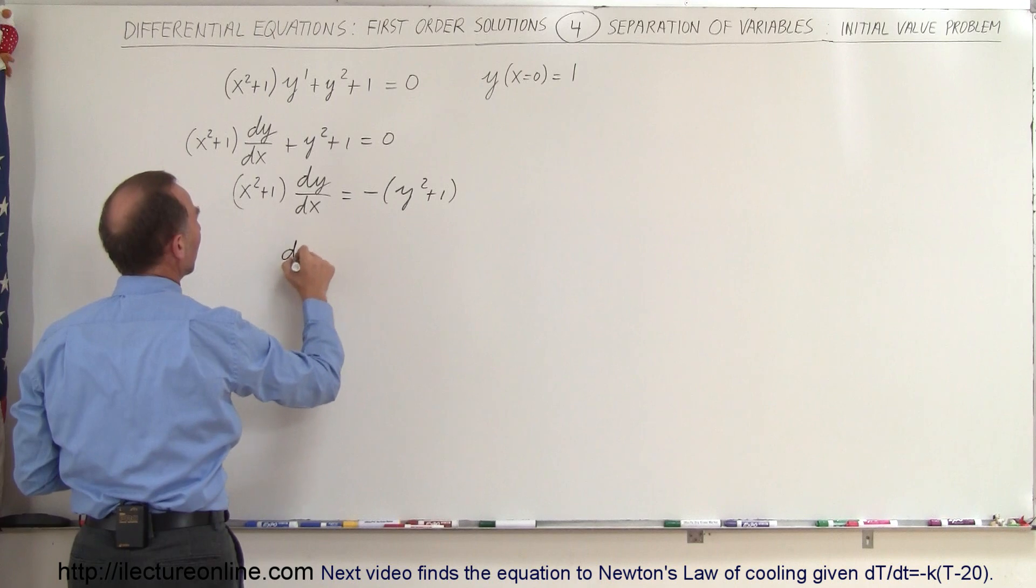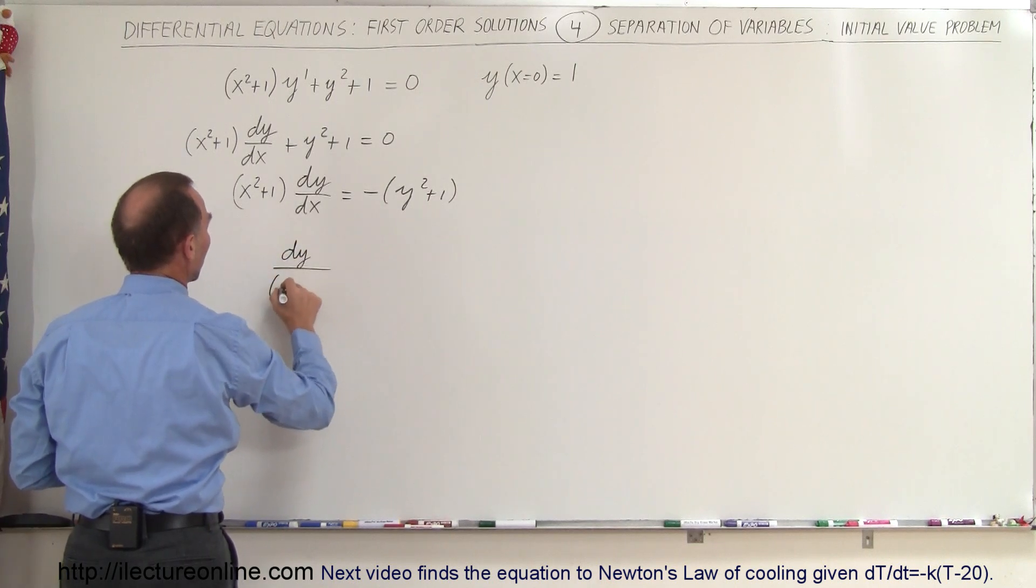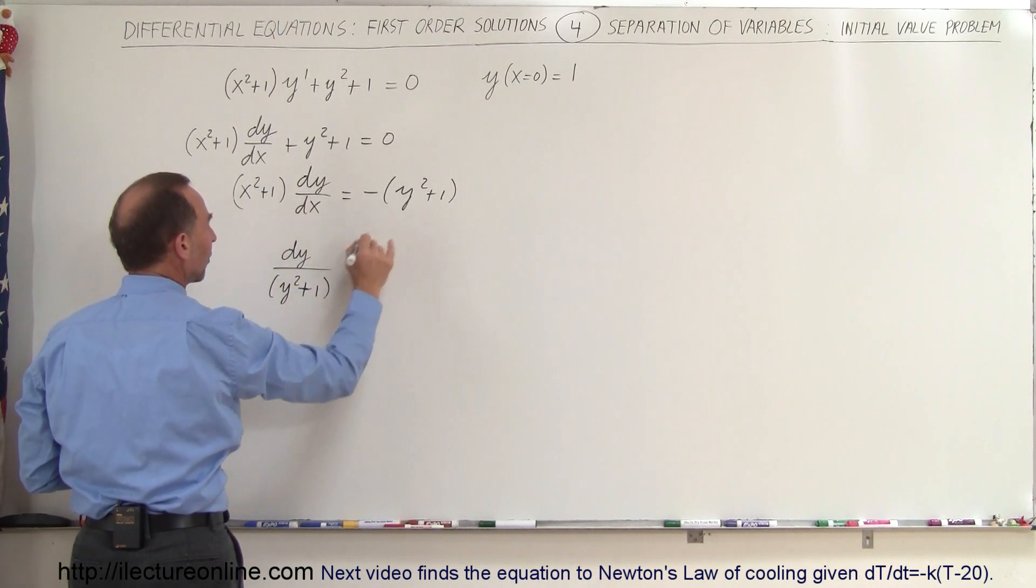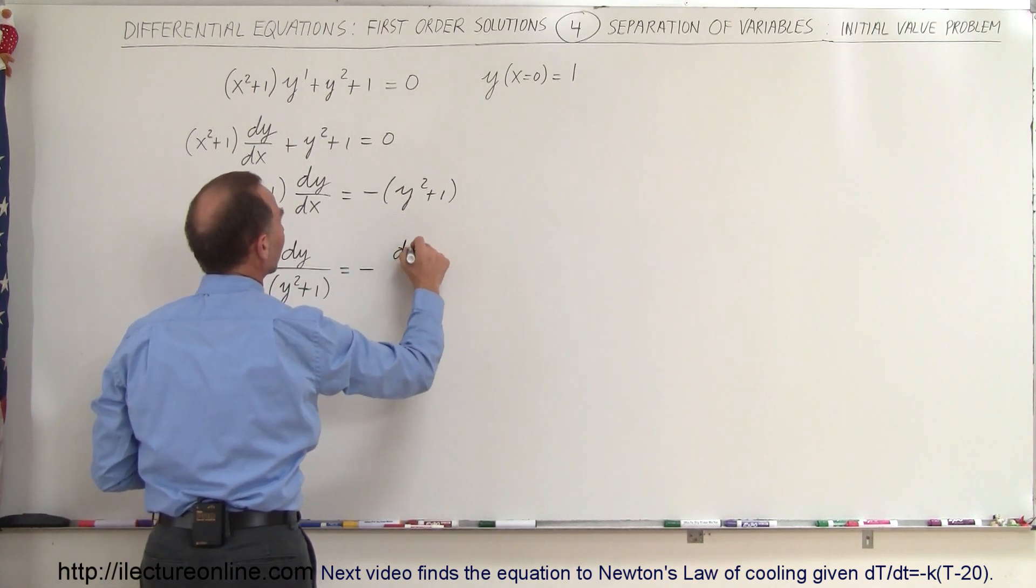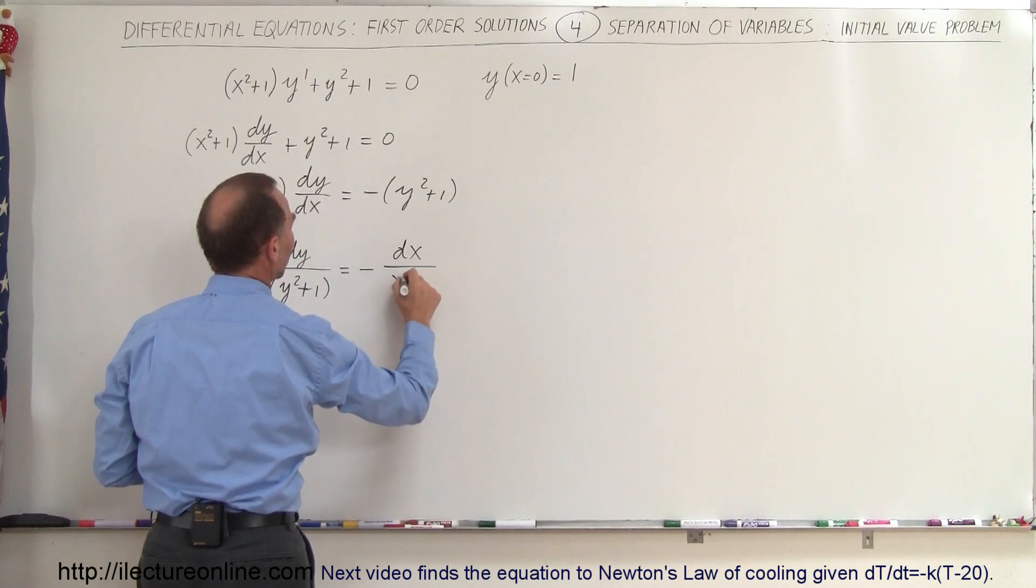So this can now be written as dy/(y² + 1), we'll leave the negative sign on the right side equation, equals -dx/(x² + 1).